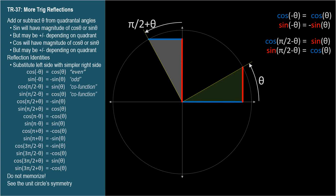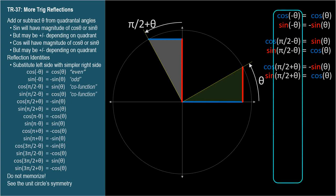Let's be careful in quadrant 2 because the cosine is negative. Cosine of pi over 2 plus theta is the shorter length, but it's in the negative direction. So cosine of pi over 2 plus theta equals negative sine theta. Sine of pi over 2 plus theta equals cosine theta. Any time we see these expressions, we can simplify to these.